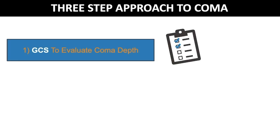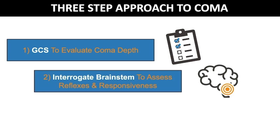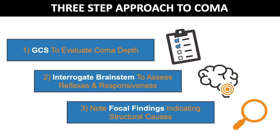A three-step approach to assessing a patient with reduced consciousness includes: 1. Evaluate coma depth with the Glasgow Coma Scale; 2. Evaluate brainstem function; 3. Assess for focal signs.